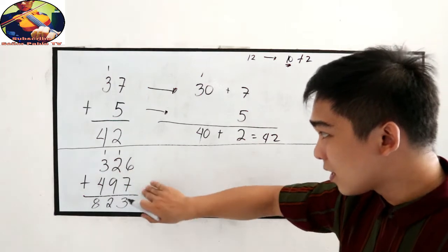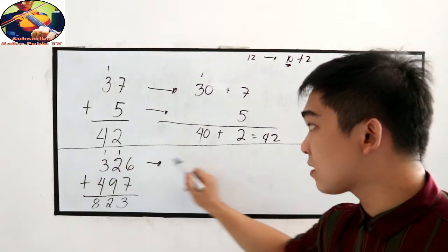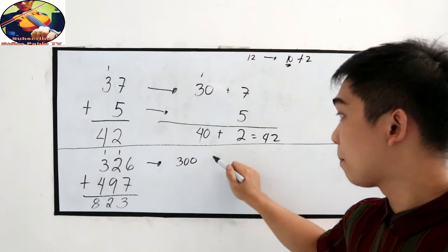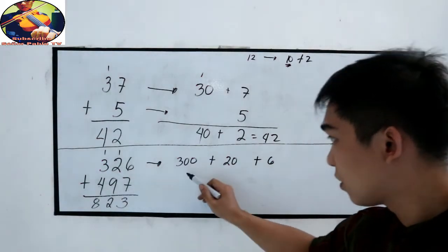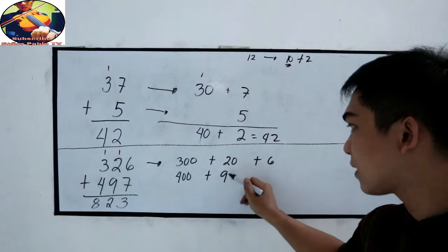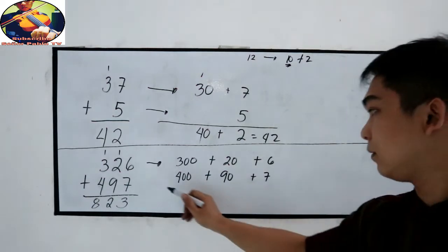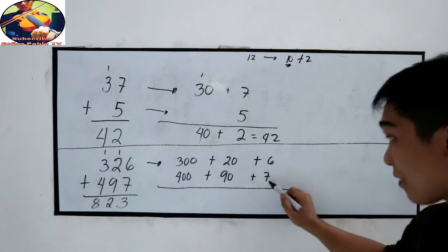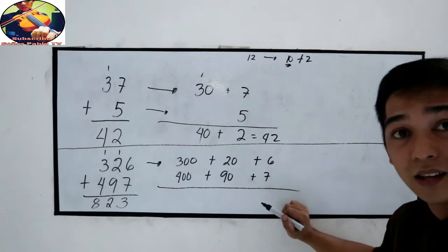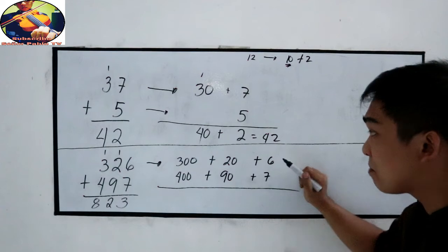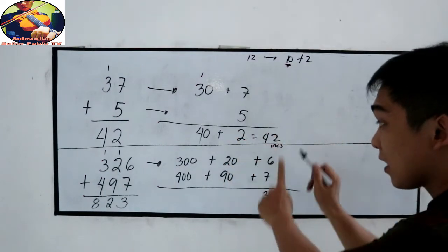To understand more, let us explain the concept of regrouping here. In expanded form, 326 is 300 plus 20 plus 6. Next, 497 is 400 plus 90 plus 7. We need to add: 6 plus 7, that is 13. In expanded form, that is 10 plus 3. So we need to write a single digit because we are in the 1's place — 10 plus 3 — we need to add the 10 to the next column.